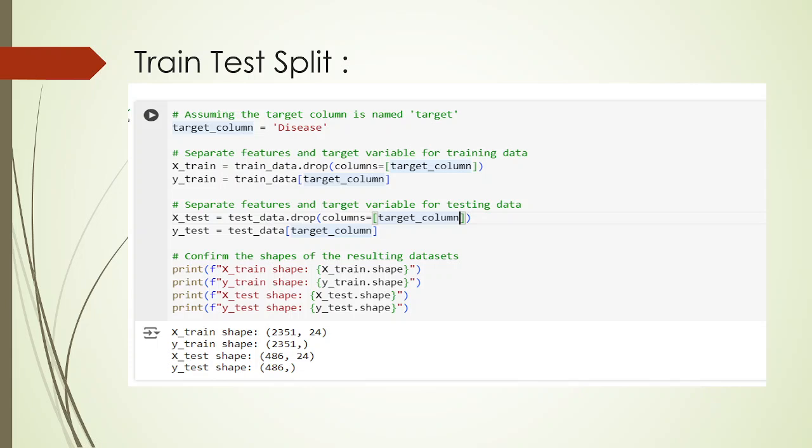Now we have to split the data into train and test sets. As you can see, x_train shape is 235 by 24 and x_test shape is 486 by 24.